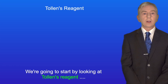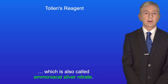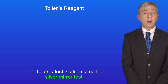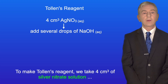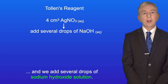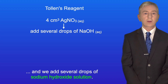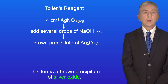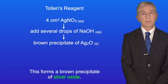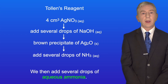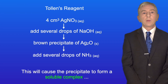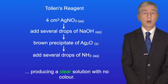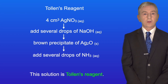We're going to start by looking at Tollens' reagent, which is also called ammoniacal silver nitrate, and the Tollens' test is also called the silver mirror test. To make Tollens' reagent, we take 4 cm³ of silver nitrate solution and add several drops of sodium hydroxide solution. This forms a brown precipitate of silver oxide. We then add several drops of aqueous ammonia, which causes the precipitate to dissolve into a soluble complex, producing a clear, colorless solution — this is Tollens' reagent.